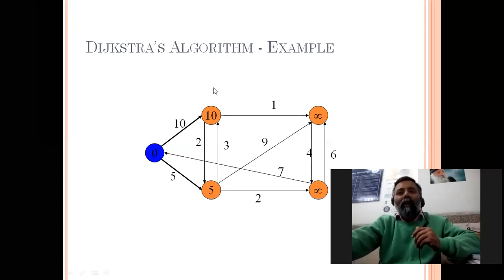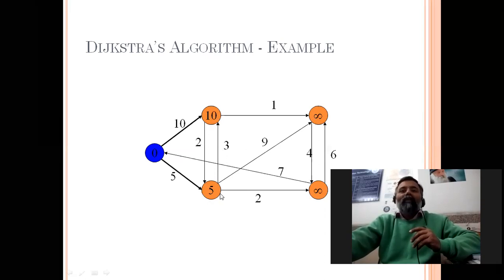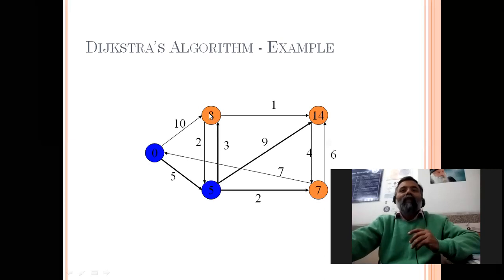Now we have four nodes in the priority queue: 10, 5, infinity, and infinity. The lowest is the node with distance 5, so it is deleted. This node has three adjacent nodes remaining in the queue: 5 + 3 = 8 is less than 10 (updated), 5 + 9 = 14 is less than infinity (updated), and 5 + 2 = 7 is less than infinity (updated). So distances are now 8, 14, and 7, and this node becomes the predecessor of all three.